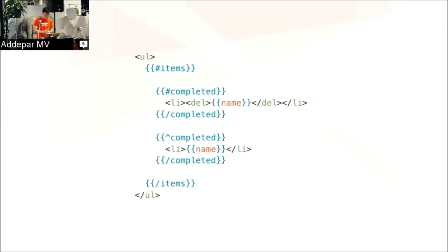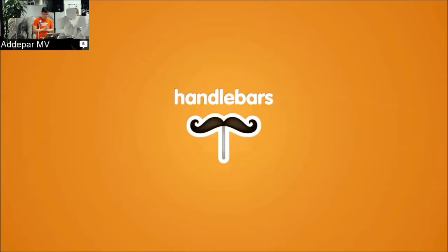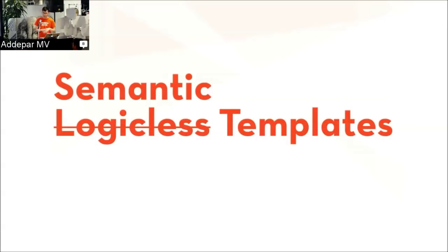With Mustache, instead of writing imperative JavaScript code, you write a template: for each item in the items array, if it's completed show this, if not show the other thing. It handles all the string interpolation and gives you an HTML string you can apply to the DOM with innerHTML. But there are a few problems. First, the syntax is somewhat strange. The pound/block syntax is ambiguous — if it's an array it loops, if it's a boolean it conditionals, if it's an object it does something else. It's tricky to understand and not very extensible.